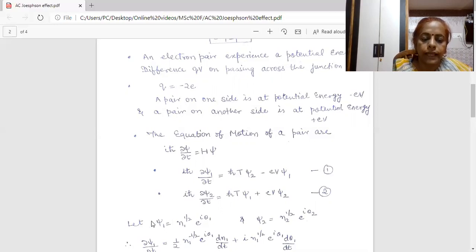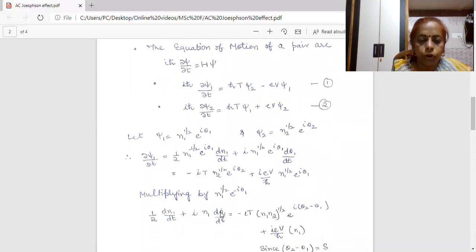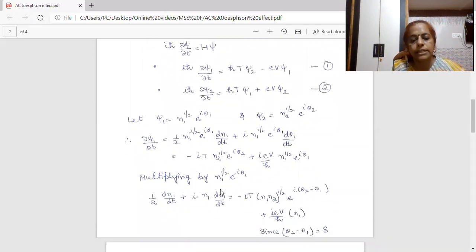From this expression, I can have the value of dψ₁/dt by differentiating it with respect to T. So, differential gives me the two terms and from this expression, equation 1, I can also find the value of dψ₁/dt. Equating these two values and in order to solve this expression, I am multiplying both sides by factor N₁^(1/2) e^(-iθ₁). I get my term (1/2) dN₁/dT + iN₁ dθ₁/dT - iT N₁N₂^(1/2) e^(i(θ₂-θ₁)) + i EV/ℏ N₁.